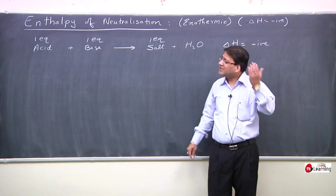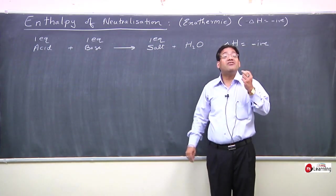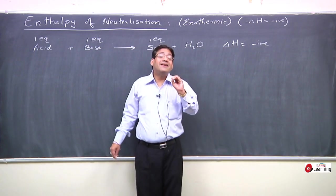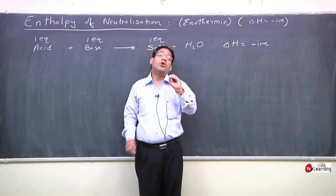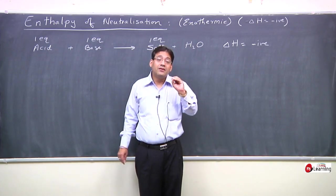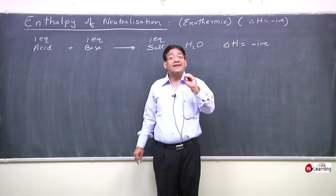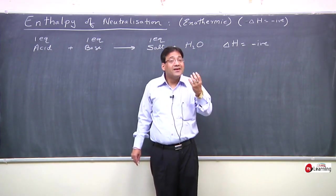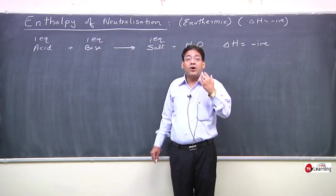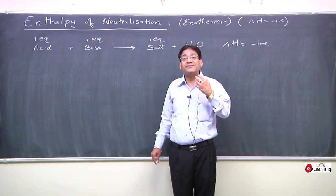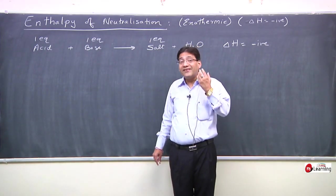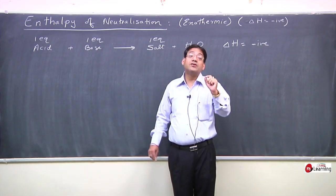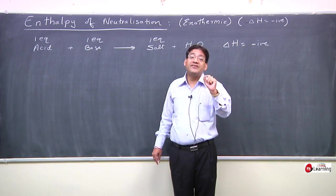What do you mean by one equivalent of acid? One equivalent of acid means the amount of acid that releases one mole of H⁺ ions. Acids are substances that release H⁺ ions, so one equivalent of acid is that amount which releases one mole of H⁺ ions.